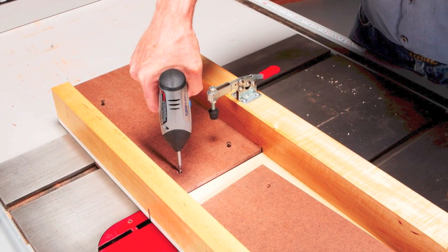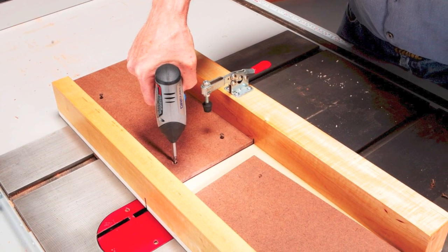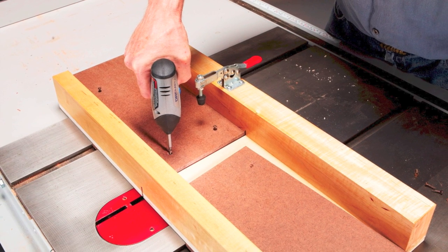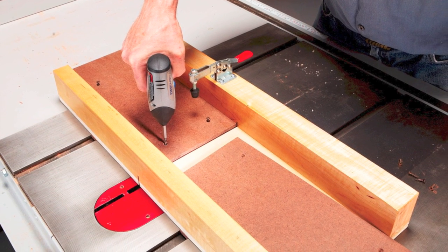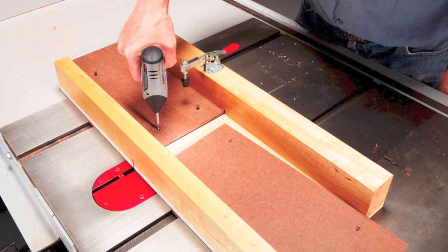Fasten two pieces of ¼-inch tempered hardboard to the sled's bottom, centered over its slot. Butt the pieces together, then raise the blade and saw through the joint.